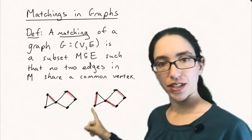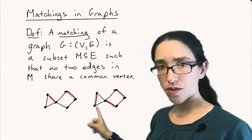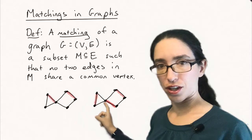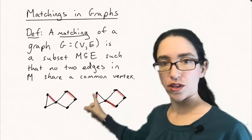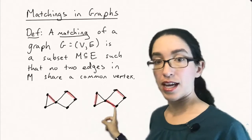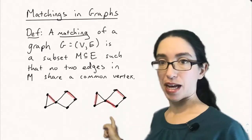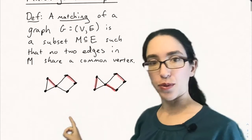Here's another example of a matching of size three. Here's an edge over here on this side of the triangle and then two other edges here. These three don't share any common vertices. In this matching, every vertex is matched with another vertex, and in this one it's not.